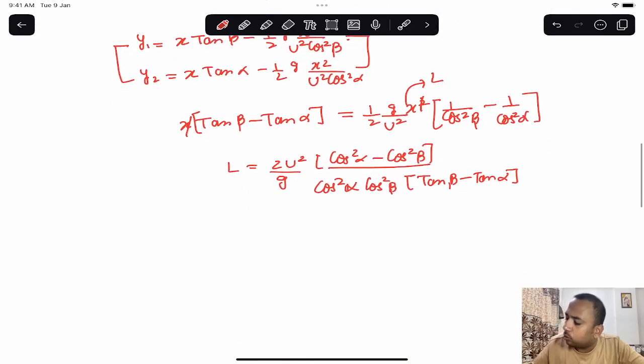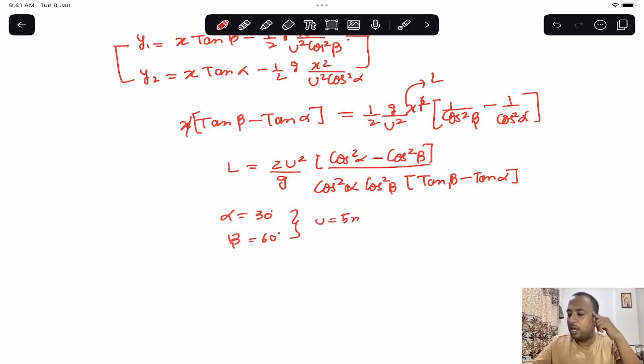You know the value of alpha is given as 30 degrees and beta is 60 degrees. Alpha is 30 degrees, beta is 60 degrees. Also, u value is given as 5 meters per second and g value you know is 10 meters per second squared. You can put all this data and you will get the automatic answer.